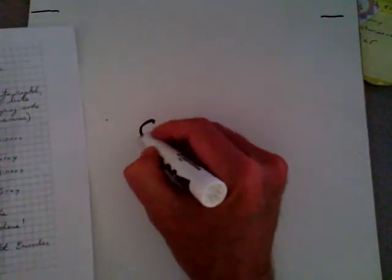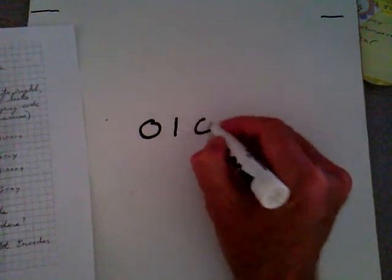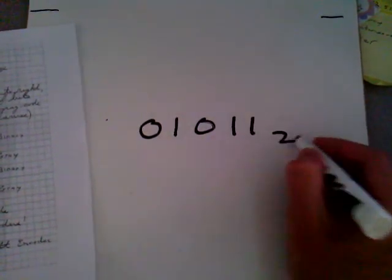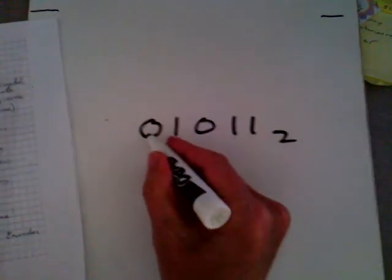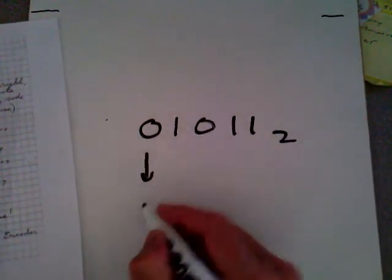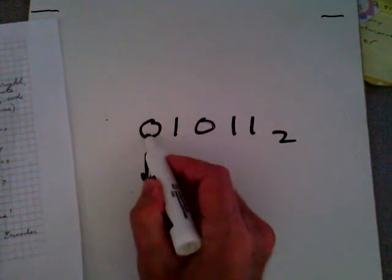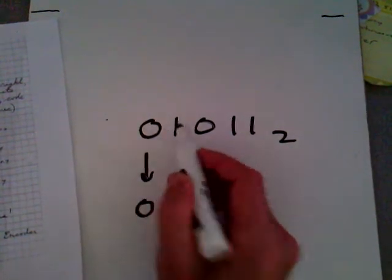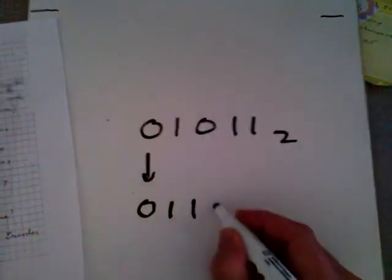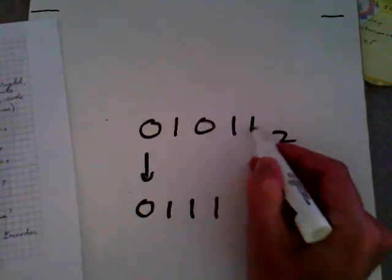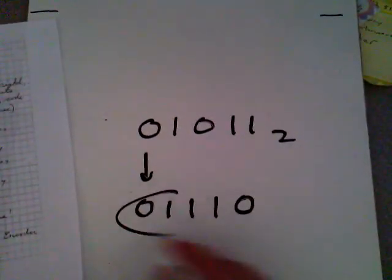Let's do the next example on page 31. The binary number is 01011. You bring the 0 down — first digit is always the same. Then: 0+1=1, 1+0=1, 0+1=1, and 1+1=0. There's your gray code equivalent: 01110.